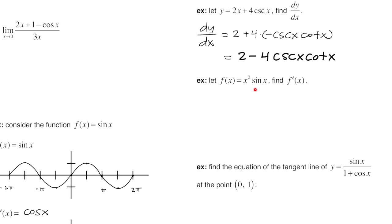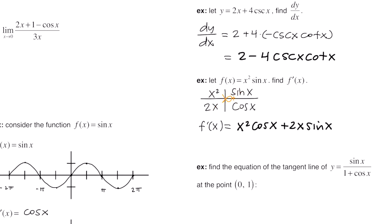This example says let f equal x squared times sine of x, find f prime. Because we have two different functions both with x in them, we use the product rule. Setting up the two functions — x squared and sine of x — we take their derivatives going down: the derivative of sine is cosine. Start in the upper left corner, multiply those, then add the product of the other pair. Our final answer is x squared cosine x plus 2x sine x.